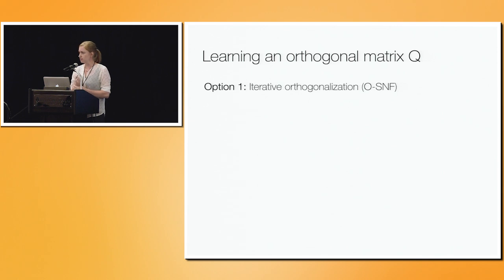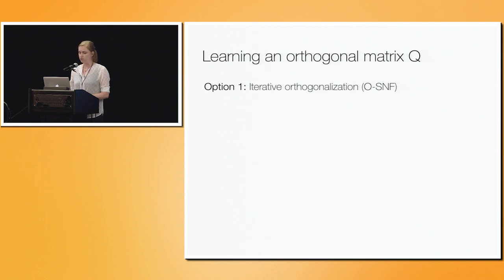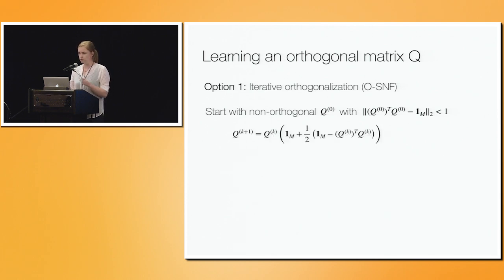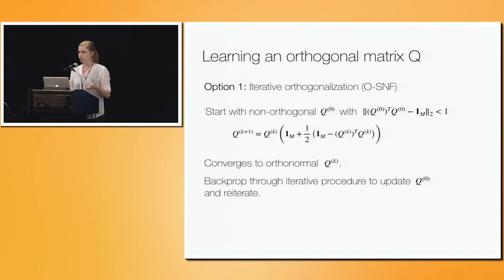We still need the Q matrices to remain orthonormal during learning. The first option is an iterative orthogonalization procedure: we start with Q0, which satisfies a required condition but is not orthonormal, and iteratively apply the procedure up to QK, where the stopping criterion ensures QK is orthonormal. During learning, we parameterize and update Q0, then reapply the iterative procedure to obtain an orthonormal QK.